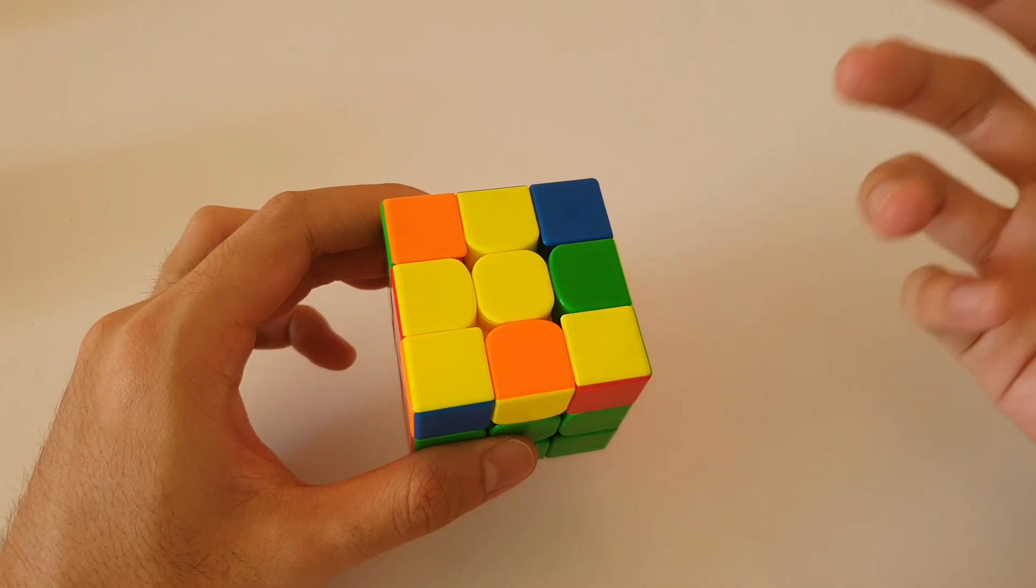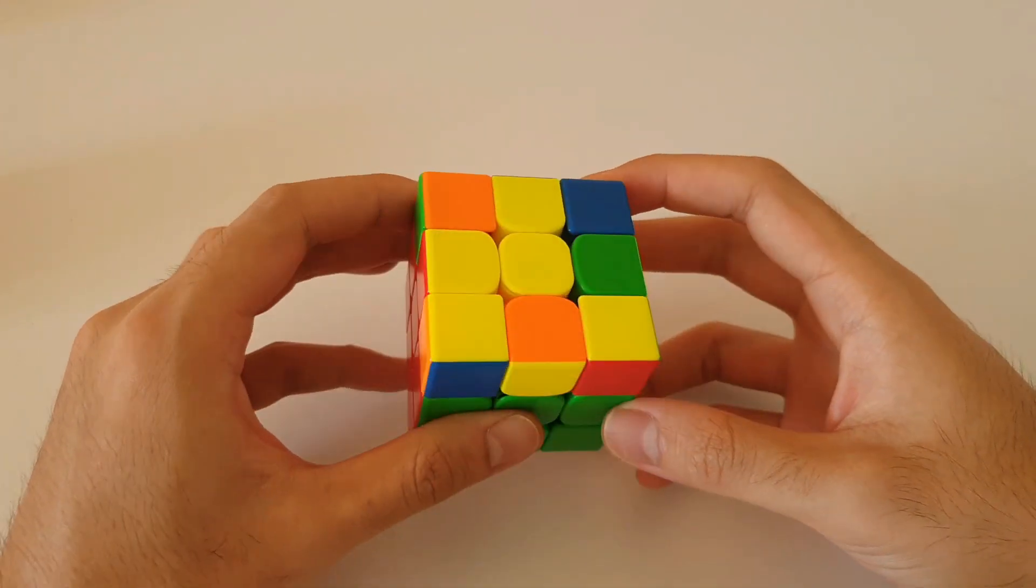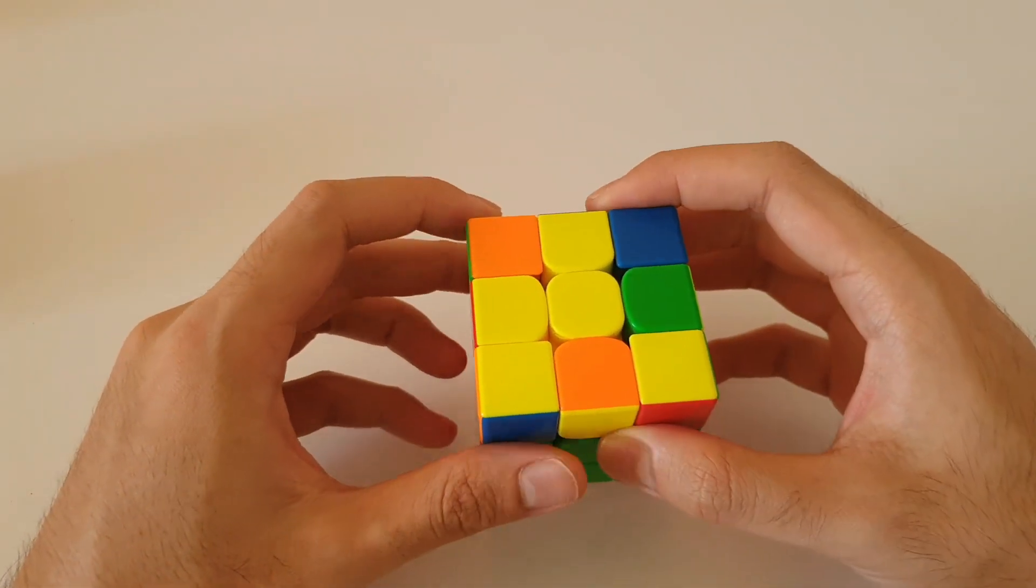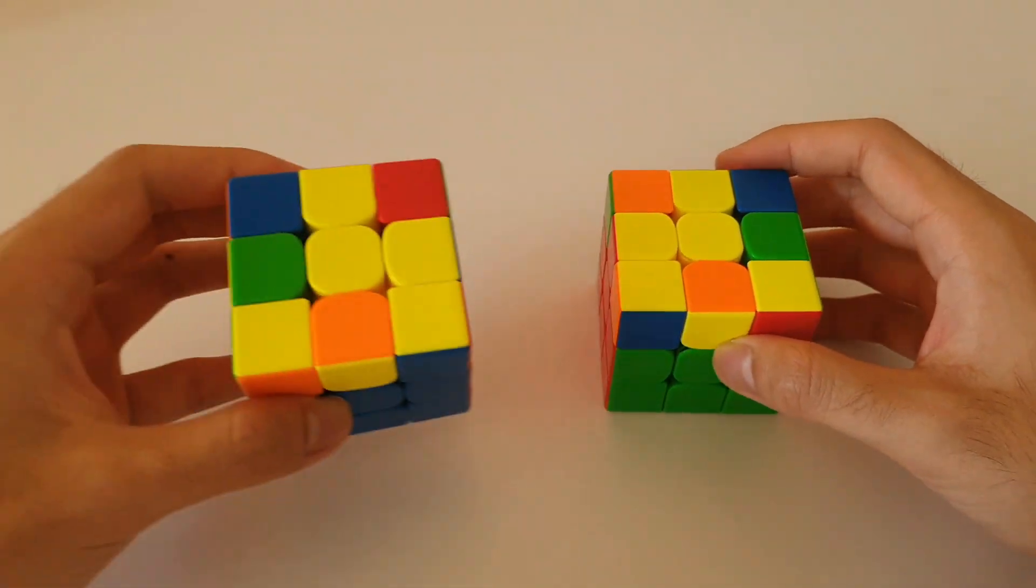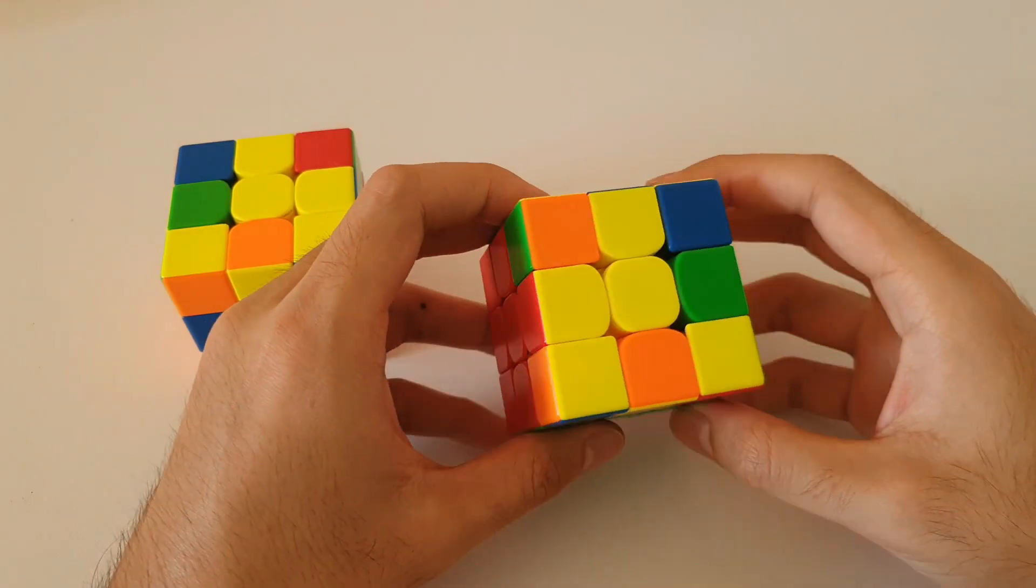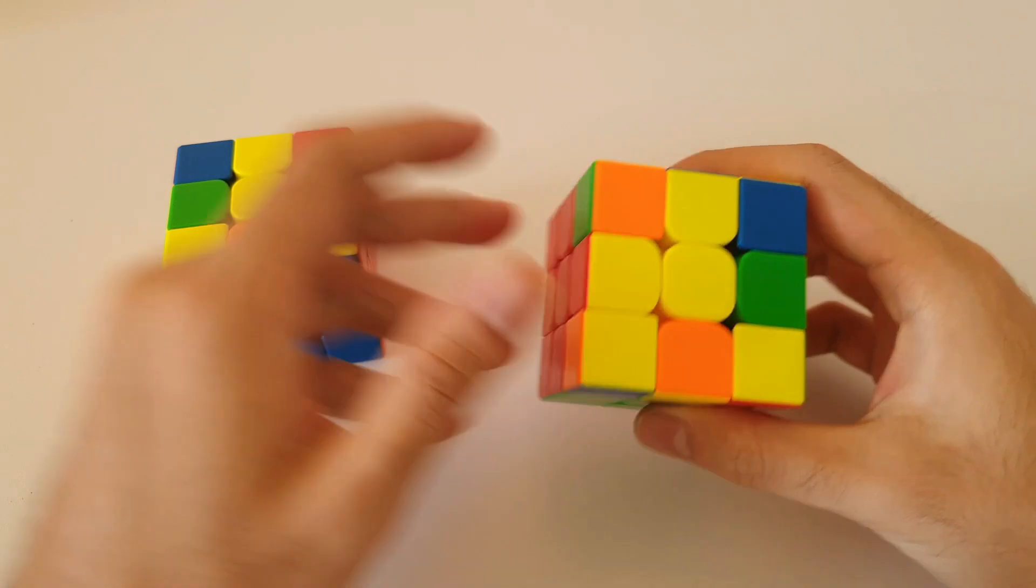So as always, there's a few different awkward shaped cases. I'm going to start with the ones with the headlights so you can get this case or you can get the mirror of this case which is this one here. So to recognize which case you have, you want to first of all hold headlights at the back.